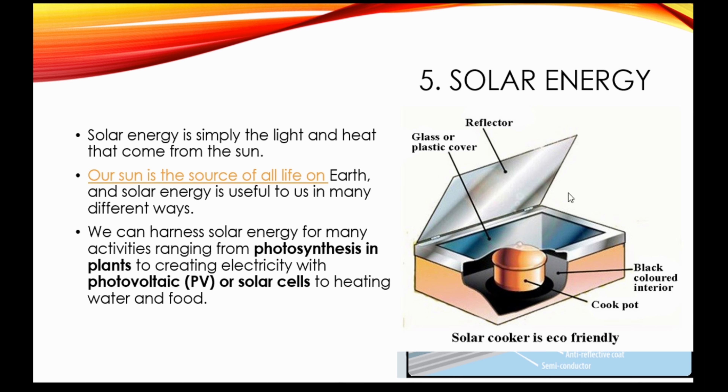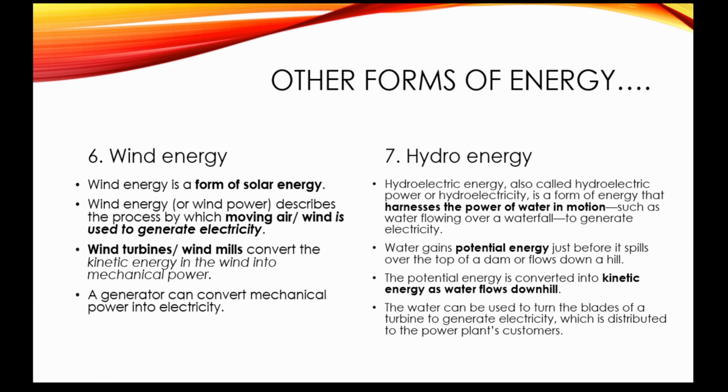Solar cookers are also used in many parts of the world because they are eco-friendly and use the sun's energy to cook food. The solar cooker consists of a box with a black interior and a reflector as a lid. The reflector concentrates all the light rays that fall on it into the interior of the box, causing the food to heat up and cook without any fire.